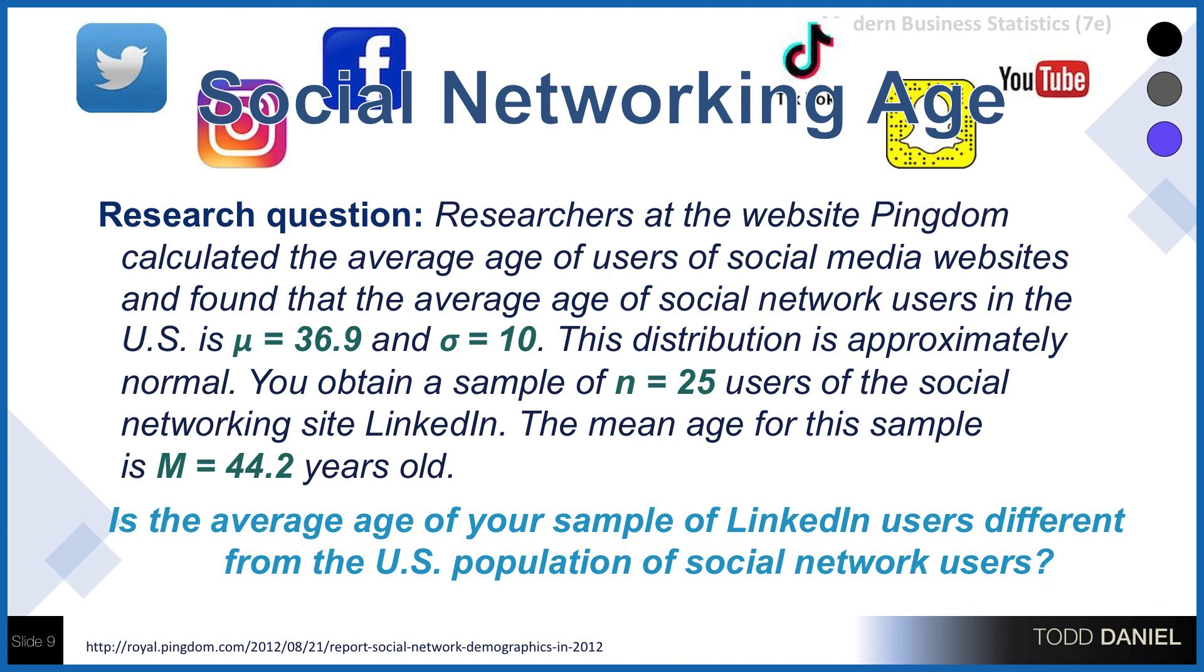They didn't actually calculate that. But I needed it for a z-test, and I needed to have a standard deviation, so that's where the number actually comes from. The distribution is approximately normal. You obtain a sample of n = 25 users of the social networking site LinkedIn. The average age for this sample is M = 44.2 years old. And our research question is, is the average age of your sample of LinkedIn users different from the United States population of social network users?